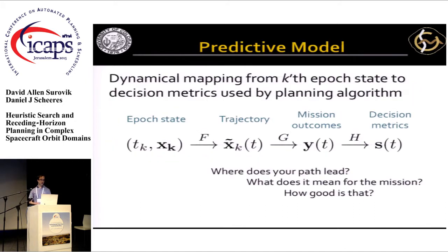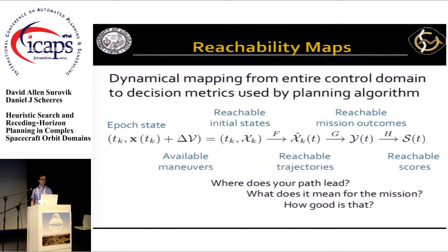On the predictive model: what I mean by 'abstract' is that we care not just where the path leads, but also what it means for the mission in terms of safety outcomes and satisfaction of goals, which may not be defined strictly in terms of state space points. And for automation, we need a single metric of just how good those outcomes are. From the reachability-based approach, I'm applying this map to an entire control domain of available maneuvers — a sphere of velocity changes — mapped through the model to a set of reachable trajectories, mission outcomes, and scores.